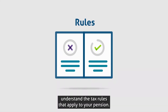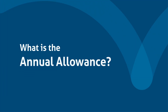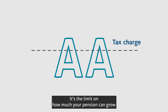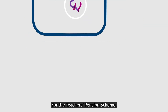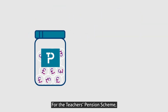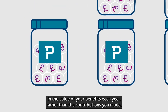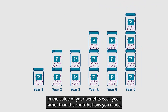It's important to understand the tax rules that apply to your pension. What is the annual allowance? It's the limit on how much your pension can grow each year and benefit from tax relief. For the Teachers' Pension Scheme, this is based on the increase in the value of your benefits each year, rather than the contributions you made.